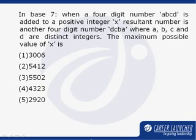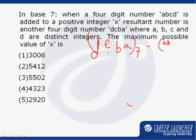So, can we write this equation as d, c, b, a in base 7 minus a, b, c, d in base 7 equal to another number in base 7 as per the question.